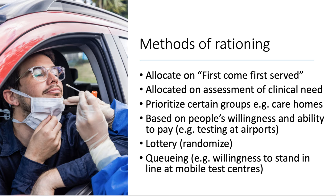There are several options for rationing test supplies. First, allocation on a first come, first served basis — though this is often not the preferred choice, as it's not very efficient. Second, allocation based on clinical need — you only get a test if you are showing symptoms of COVID. Third, prioritising certain groups: people working in the NHS, in care homes, and other frontline workers who would have prioritised access to testing capacity.